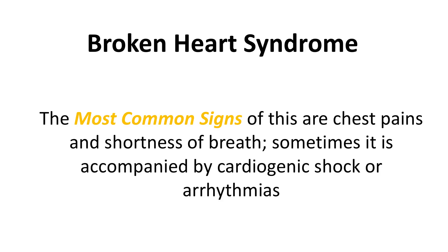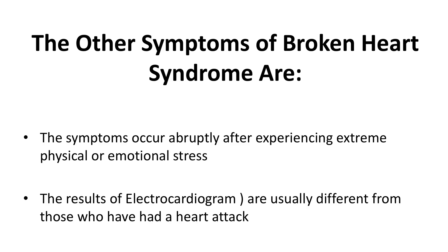Broken heart syndrome is named because it can happen to someone who has no history of heart disease and tends to happen quickly. The most common signs are chest pains and shortness of breath, sometimes accompanied by cardiogenic shock or arrhythmias. The symptoms occur abruptly after experiencing extreme physical or emotional stress. The results of an electrocardiogram, or ECG — a test to observe the heart's electrical activities — are usually different from those who have had a heart attack. Those who have had a heart attack in the past will show a deep Q wave in their ECG graph.